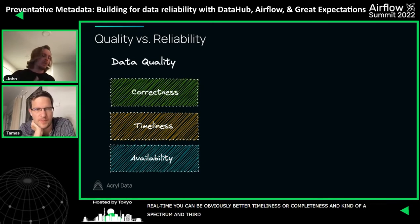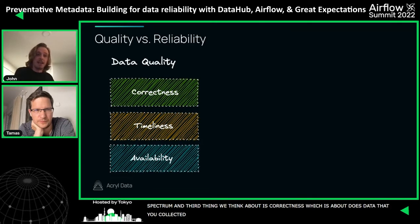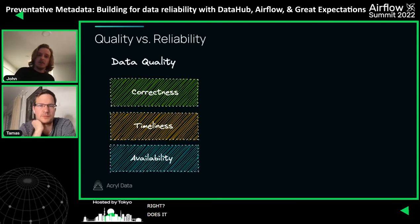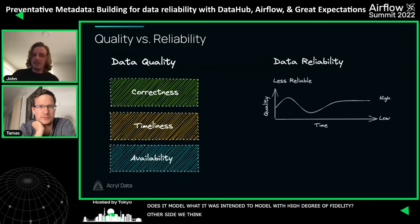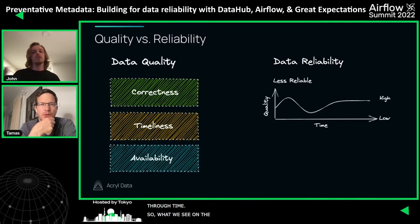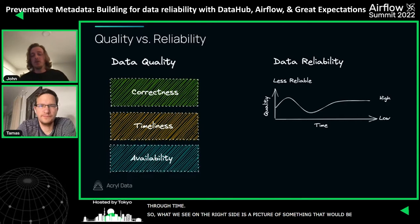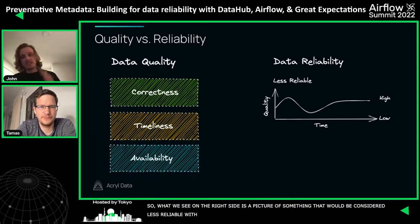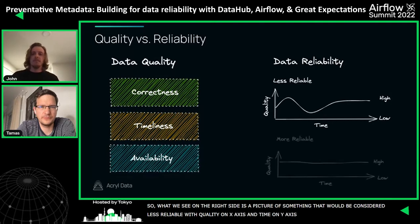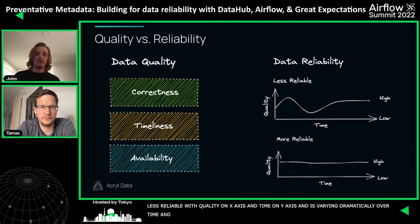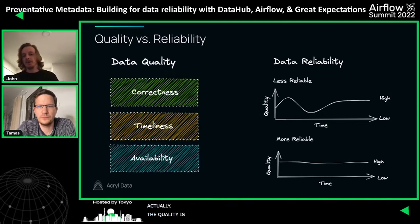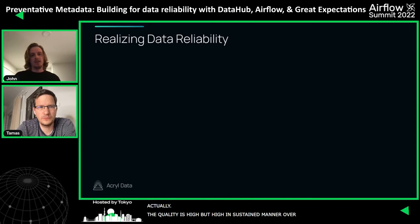On the other side, we think of data reliability as the stability of these quality characteristics through time. Something less reliable would show quality varying dramatically on a chart of quality versus time. Something more reliable is defined by two characteristics: the quality is high, and it's high in a sustained manner — consistently high over time.